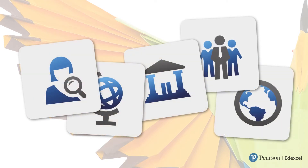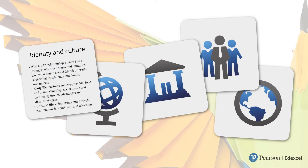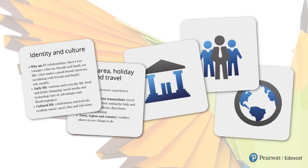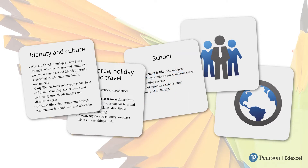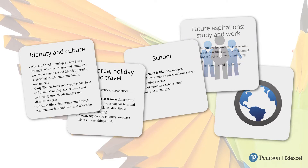Our GCSE has five themes, each with two or three topics. We've carefully selected themes to build on Key Stage 3 knowledge, whilst encouraging the teaching and learning of the culture of the target language country. This focus is stimulating for students, and provides good preparation for those going on to study our reformed GCE qualifications, where knowledge of the target language culture is essential.